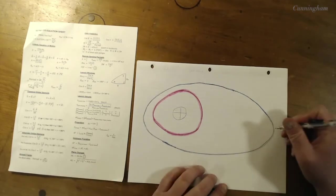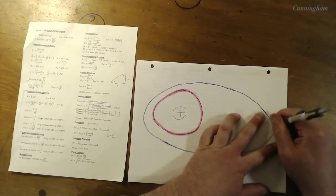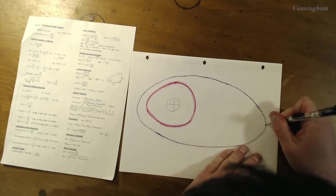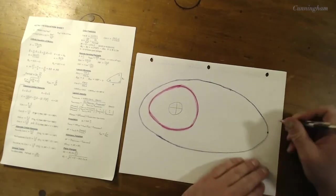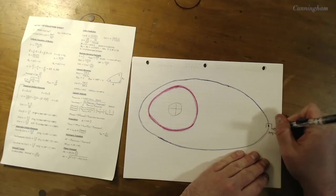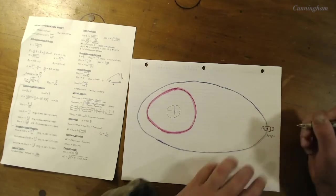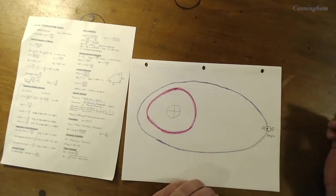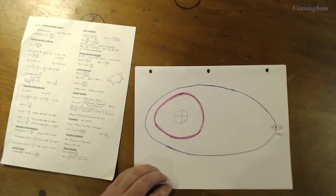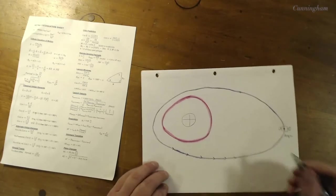You might ask yourself what's the farthest point in any orbit away from the central body, away from the earth? Well of course it's apogee. Let's say this is apogee right, and let's say this is where our satellite starts for this problem. I'll just tell you the first burn needs to be accomplished out here.